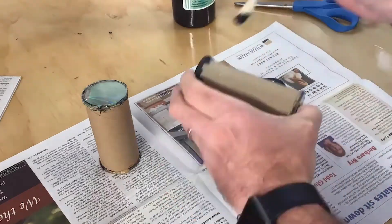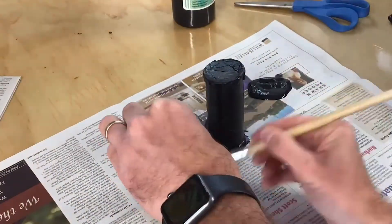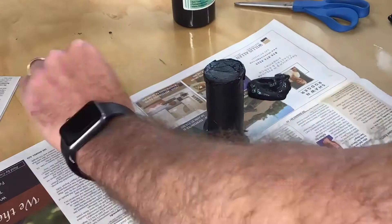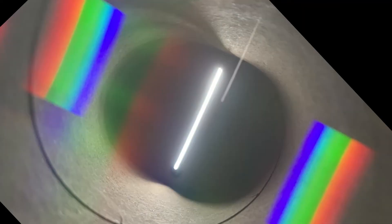Another option is to paint the spectroscope a dark color. This is going to keep light from getting in. You do not want to paint the CD side. You're just painting the cardboard sections.